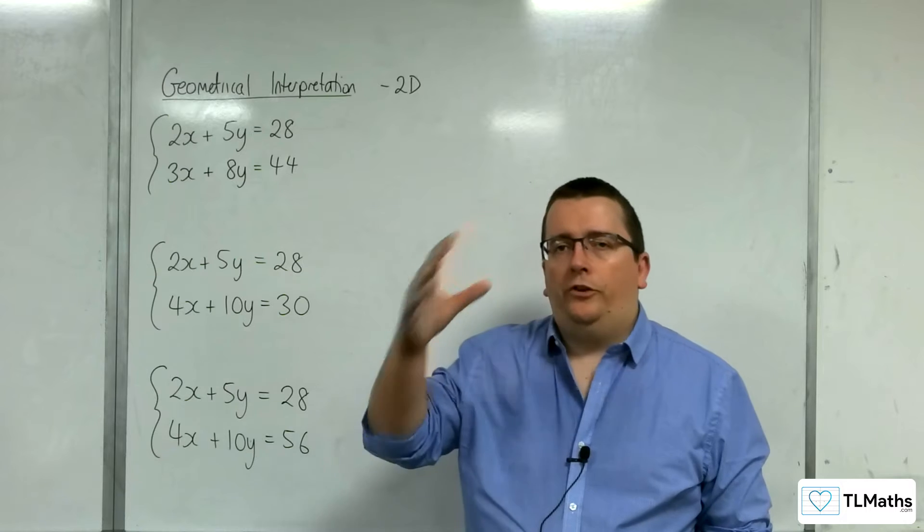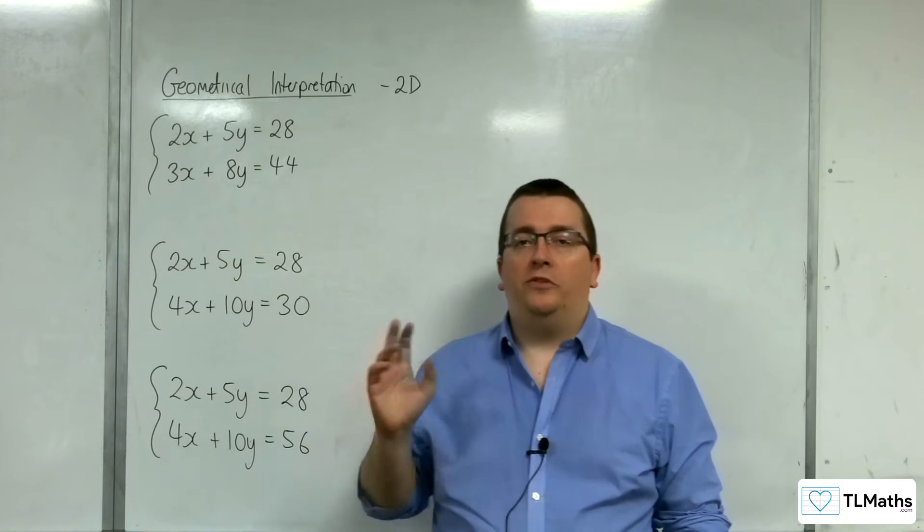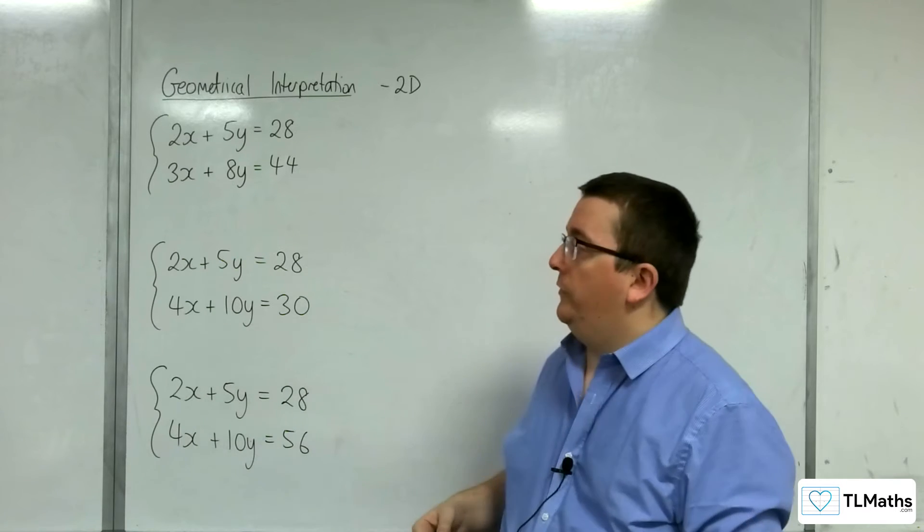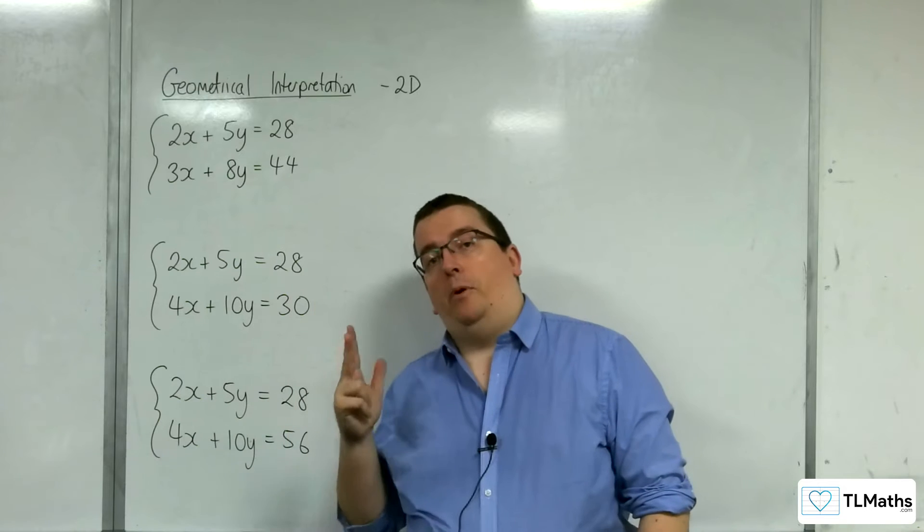Now if you have two sets of simultaneous equations with two unknowns, two linear equations, there's only three possibilities.